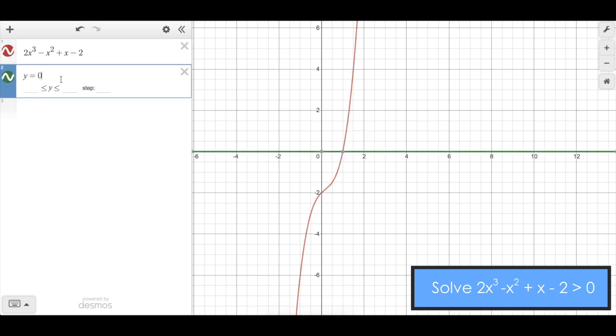Now if I graph the line y equals zero, what I'll see is a horizontal line along the x-axis. This makes it even clearer that this function is greater than zero after the x-intercept of one.